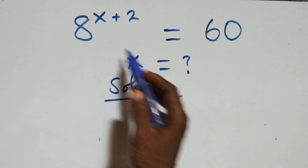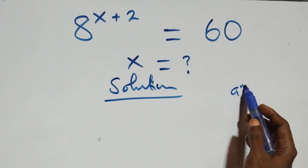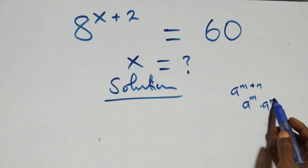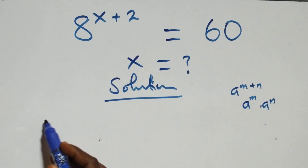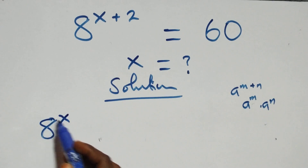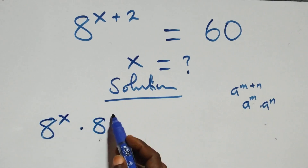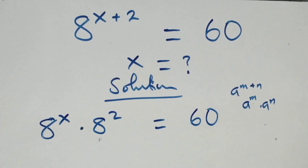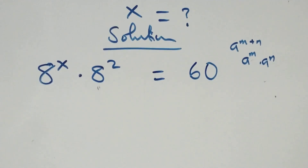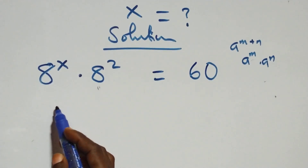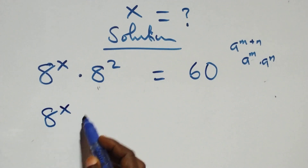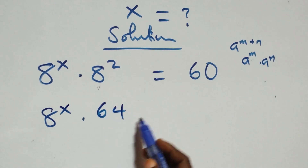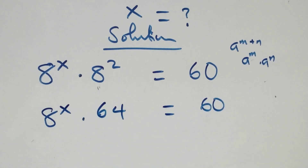On what we have here, this follows: we have a raised to power n plus n, which becomes a raised to power n times a raised to power n. So I write this as a raised to power x times 8 squared equals 60. We write this as a raised to power x times 8 squared — 8 times 8, that's 64 — equals to 60 on this side.